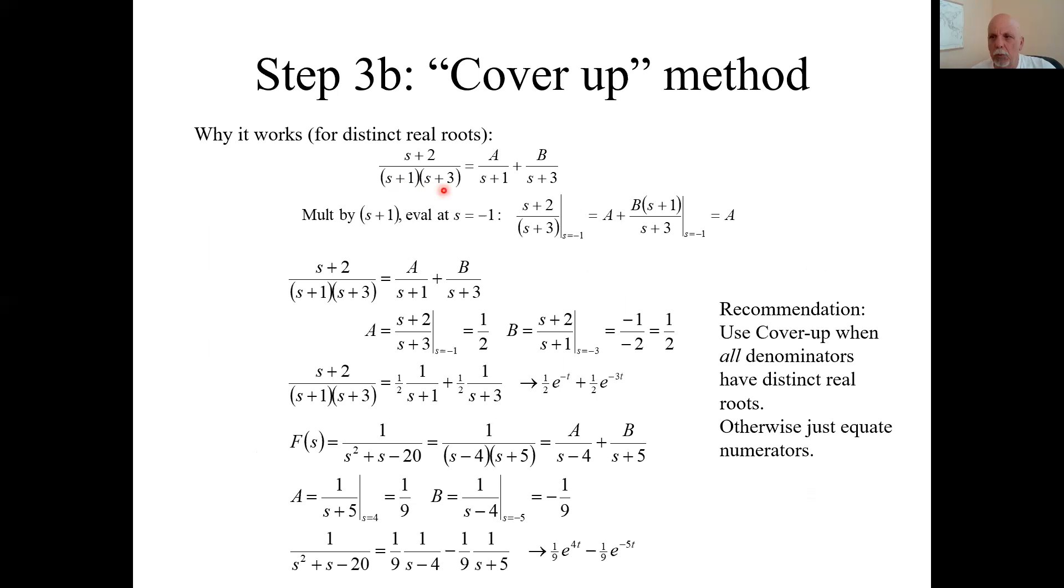Here's a case where you have two real roots, both distinct. We broke it up and it looks like this. What if I multiplied everything by s plus 1 and then evaluated it at what makes s plus 1 go to 0, which would be s equals minus 1. So on the left, I'd have s plus 2 over s plus 3.